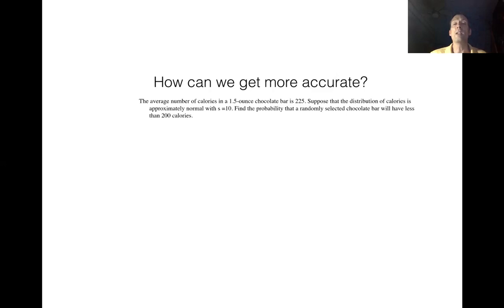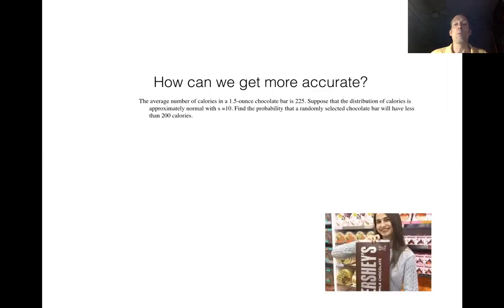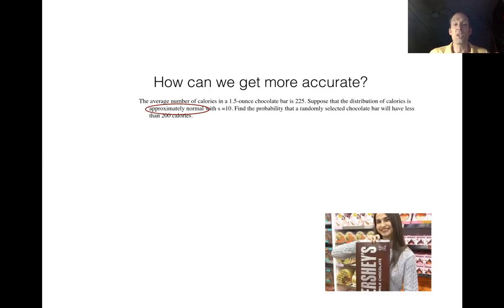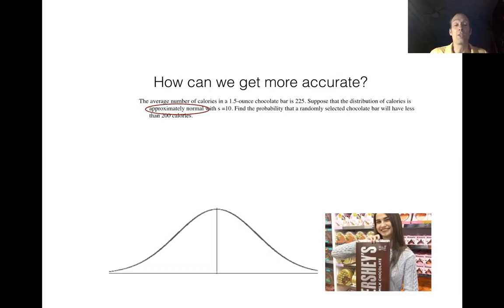Take a minute to pause the video if you'd like to read through the question. So what's the most important part of the question? It's not the average, not the standard deviation, and not the x value. The most important thing we're looking for is actually something qualitative — we need to see if we're normally distributed. In this case we are: they're saying approximately normal. So now we get really excited, because it means we get to sketch a curve.